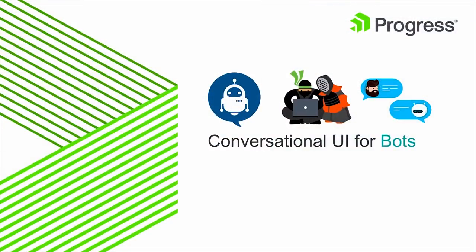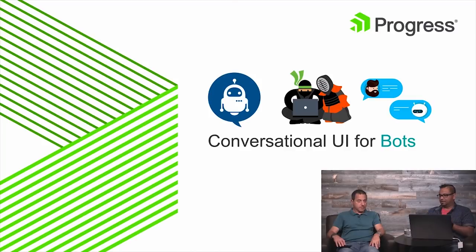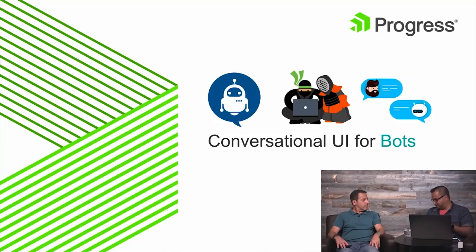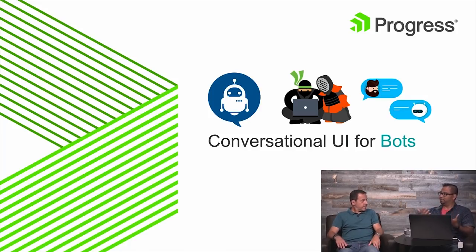Let's roll — thank you so much for having me. Let's talk about conversational UI in bots. We talked about what bots are: they're essentially apps, but they need to be a little smart with all the intelligence behind the scenes in the cloud. Your user doesn't really care about how you get that intelligence. To them, it's all about how do I use this bot — is it friendly enough, is it visually appealing enough?